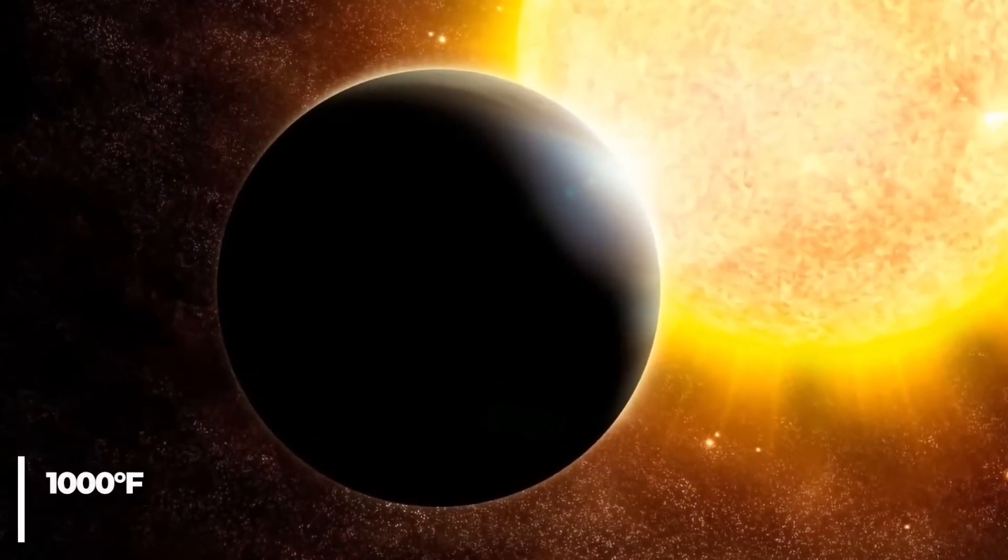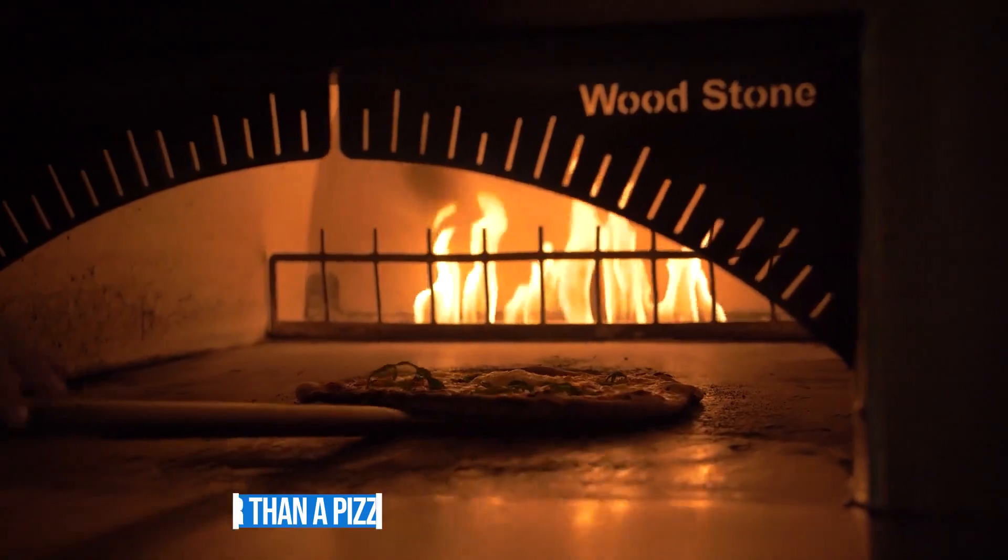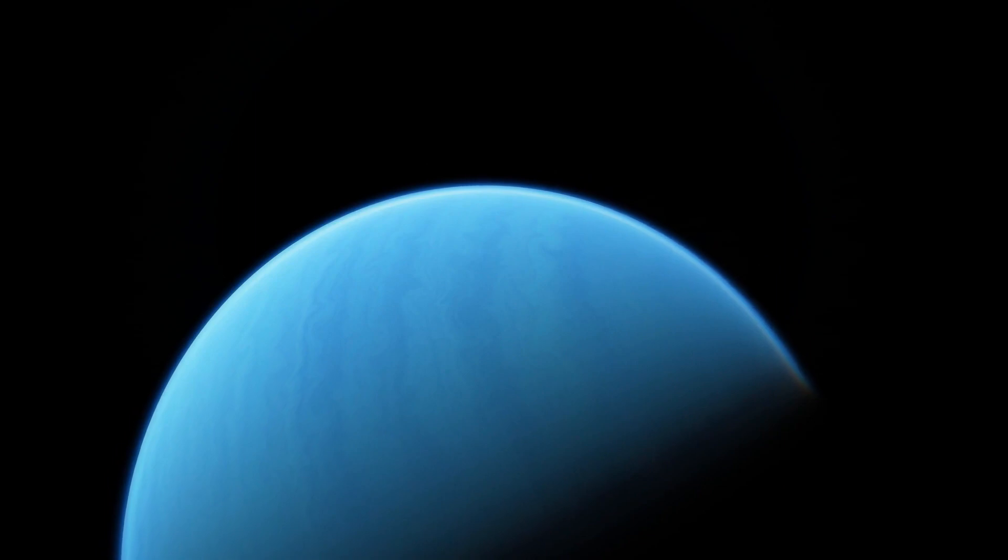WASP-96b has a temperature that is greater than 1,000 degrees Fahrenheit, making it far hotter than a pizza oven. It is also much puffier than any planet that orbits our sun, completing one circuit every three and a half Earth days.